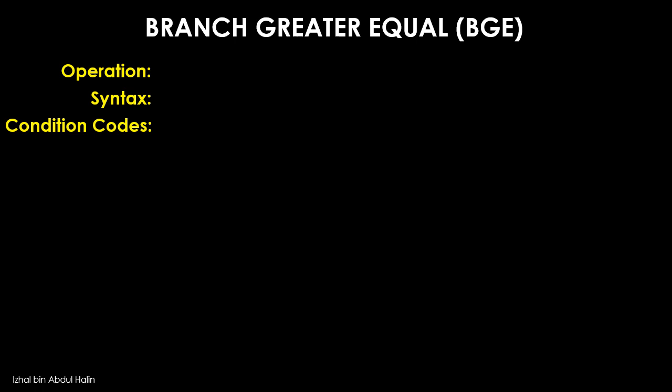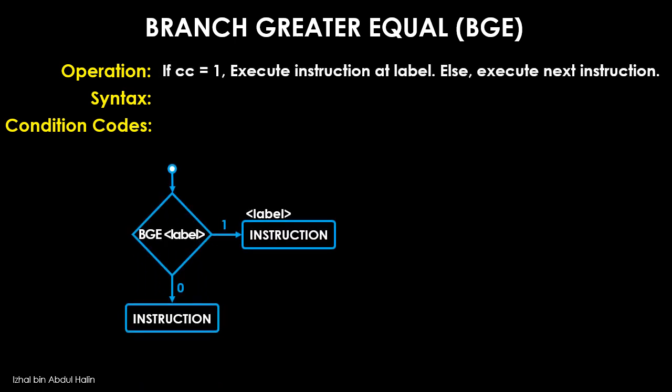Let's study the branch greater equal instruction. It is used to determine if an operand is greater than or equal to another operand. This instruction initiates a branch if the condition code is one; it will not branch otherwise. The general syntax is BGE label. The condition code is N and V, OR'd with N-bar and V-bar.